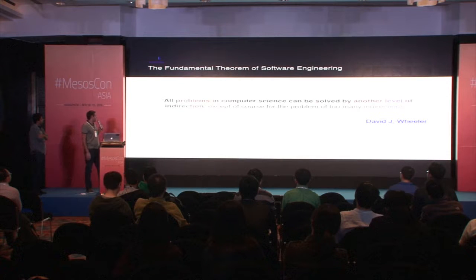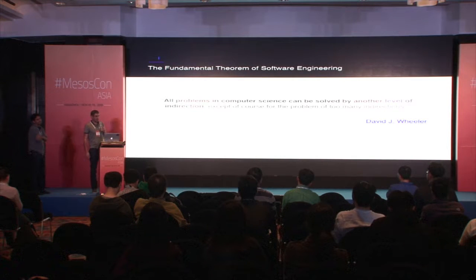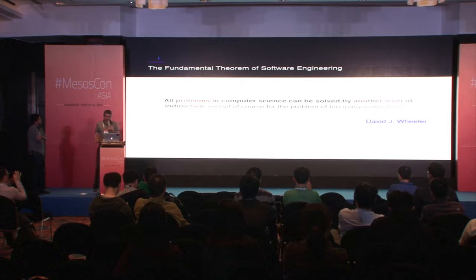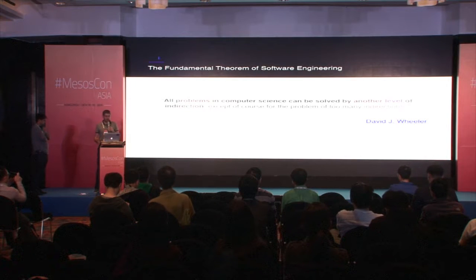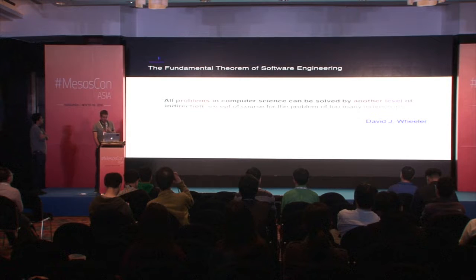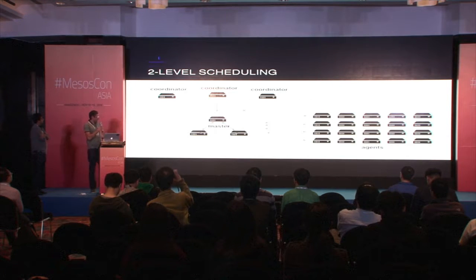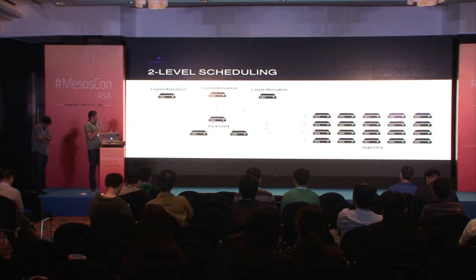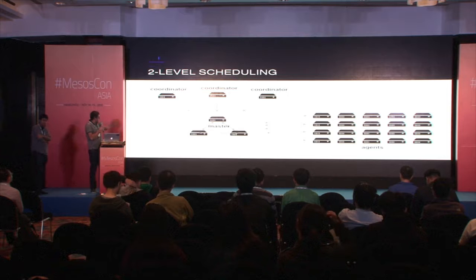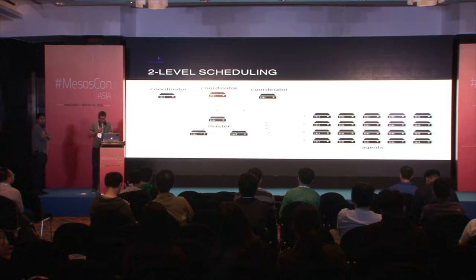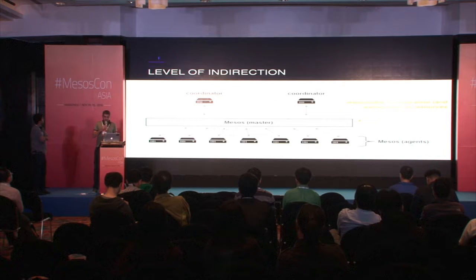One of the most fundamental things we learn as computer science students is that pretty much every problem in computer science can be solved by adding another level of indirection. So, enter Mesos. What Mesos introduced is an architecture with a highly available master, a set of agents, and a bunch of coordinators or schedulers — also known as frameworks — running on top. Fundamentally, this is just another level of indirection.